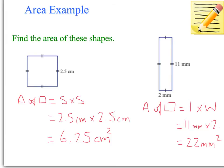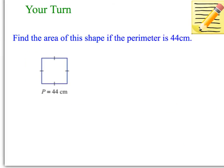Now I've got another example — a reasoning question. What I want you to do is figure out the area of this shape if the perimeter is 44 cm. The perimeter is the outside of the shape, so the perimeter is 44 cm — but what does that mean the area is? You have to work out what each side equals by working out the individual side length from the perimeter, then you can work out the area. Pause the video and have a go.